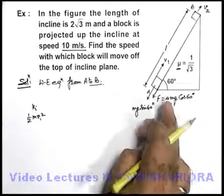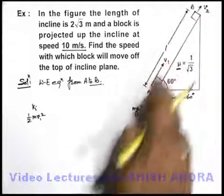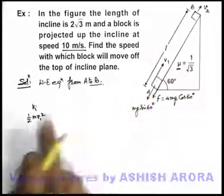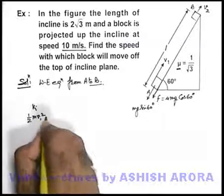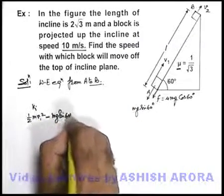So both of these forces will be doing negative work on the block during its motion, for the total displacement length l. So we can write, initial kinetic energy minus it will be mg sine 60 degrees into l.